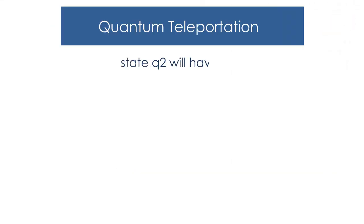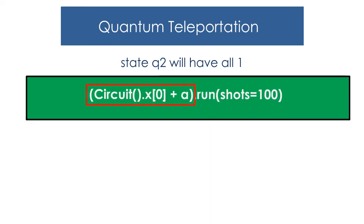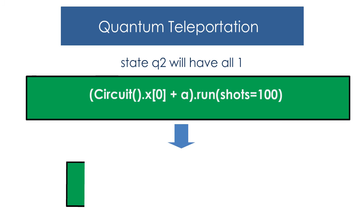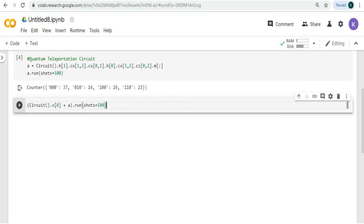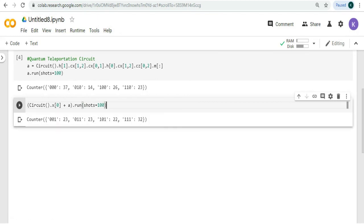Next, we will see that the q2 state will have all one. For that, we have to apply X gate at q0. When we run this on Google Colab, we will get this output. Let's try it. Run this. Now, we can see that we get q2 with value 1. We can say that q0 state is transported to q2 state.